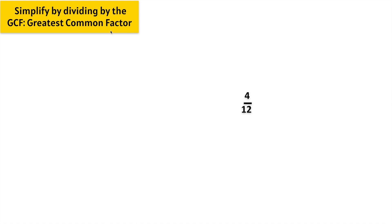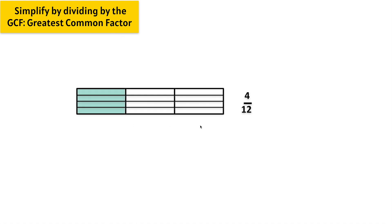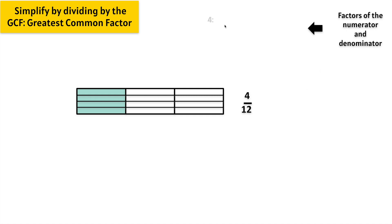Let's simplify 4 twelfths by dividing by the greatest common factor. Here we have 4 twelfths — 12 equal parts with 4 of them shaded in blue. In order to simplify 4 twelfths, we need the factors of the numerator and the factors of the denominator. The numerator is 4 and the denominator is 12.